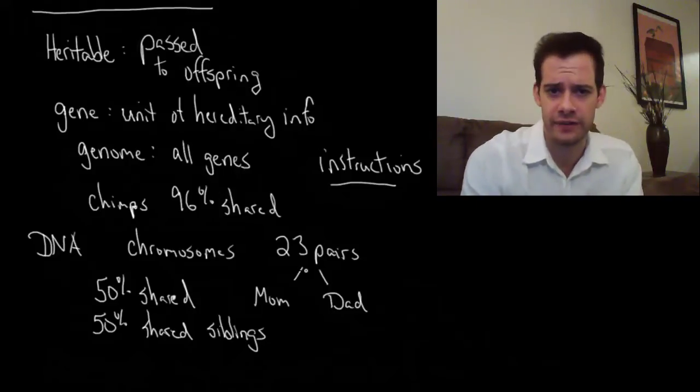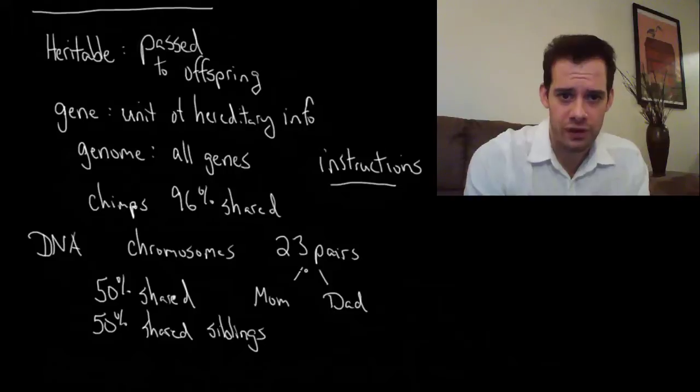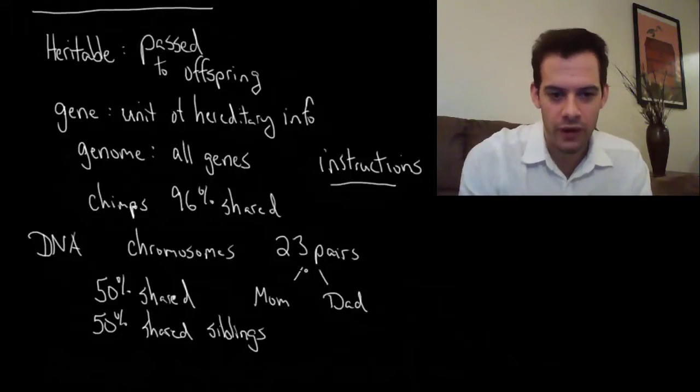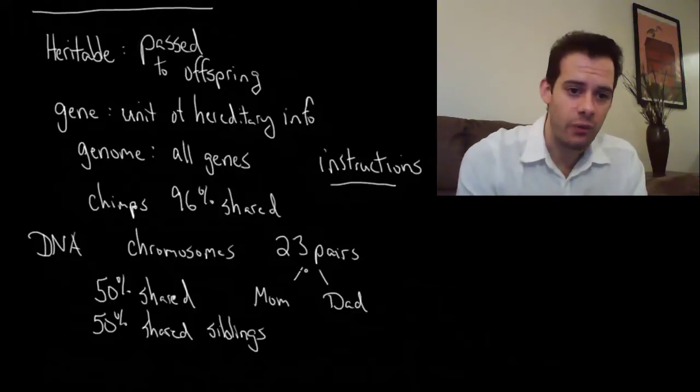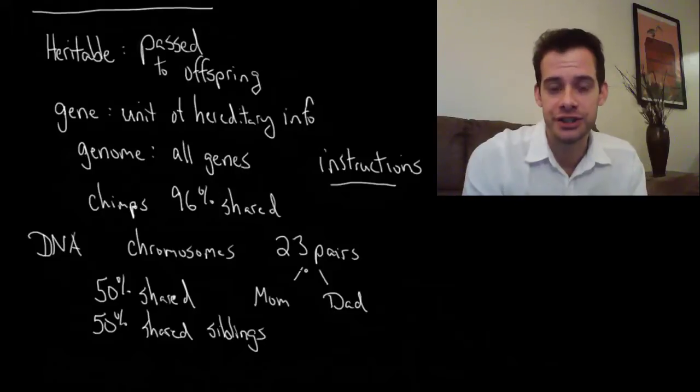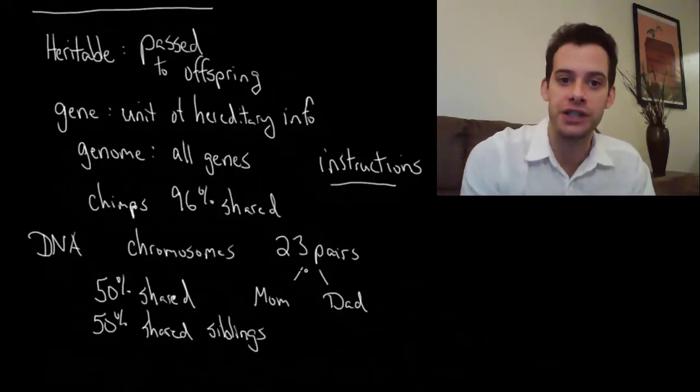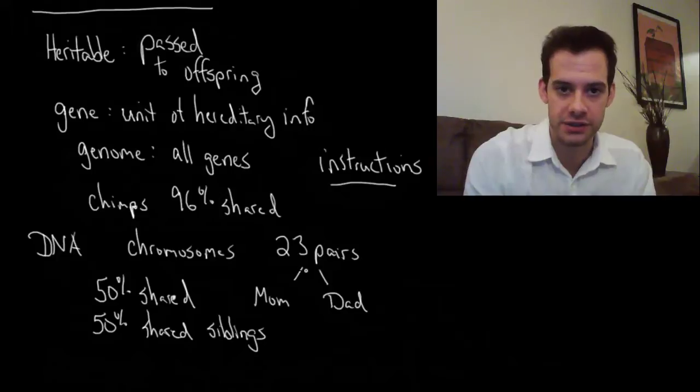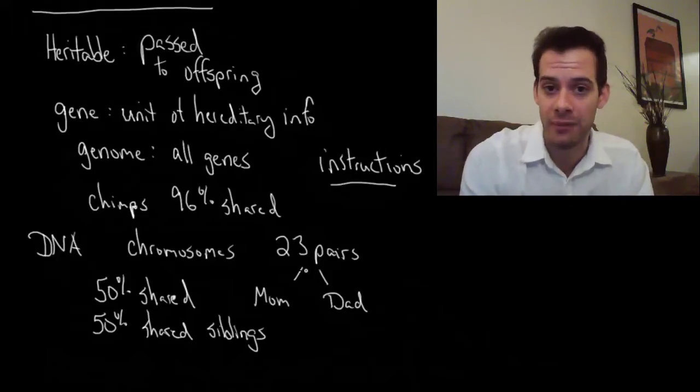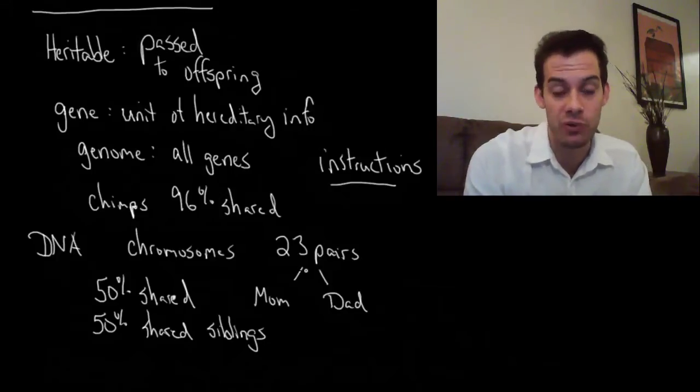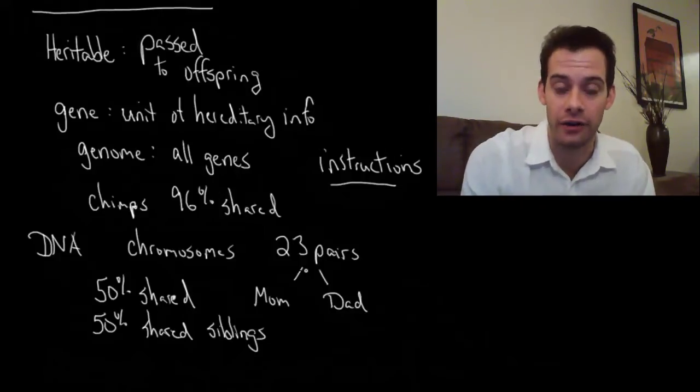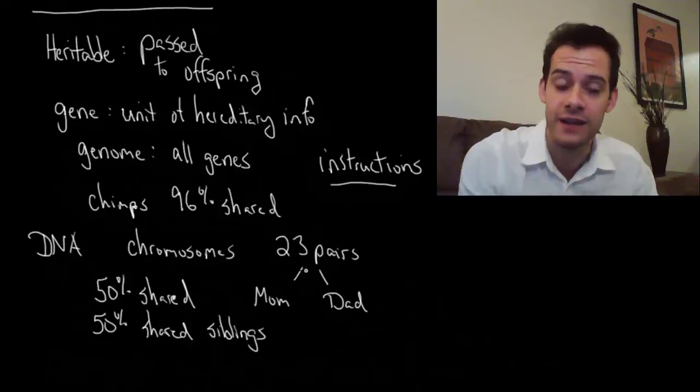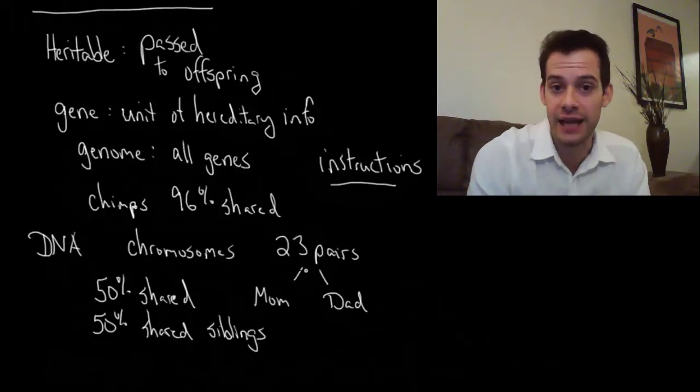Now you might be confused at this point because you say, Mike you just said that we share 96% of our genes with chimps and now you're telling me that I only share 50% of my genes with my brother. Well, we're talking about different things here. When we talk about genomes, we talk about shared genes across species, we're talking about the overall genome, the overall set of instructions. In that case if we talk about humans, humans have 99.9% shared genes. You have pretty much the same genes as everyone else on earth, any other human who's ever lived. You have pretty much the same genes, nearly identical.